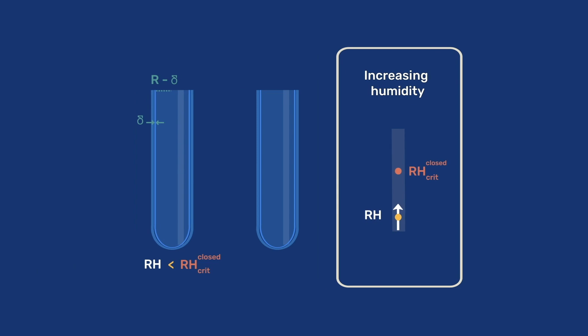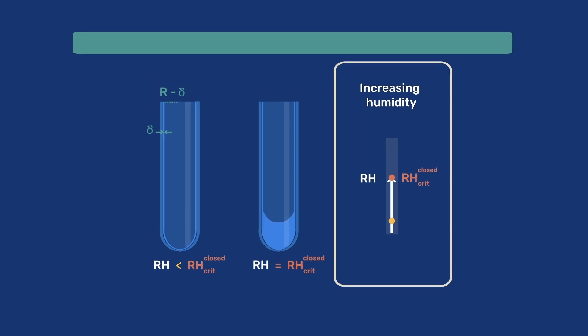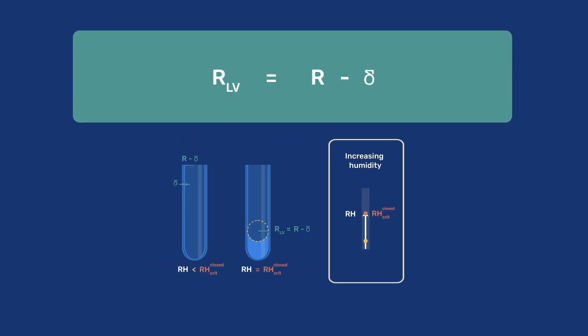Let us now go back to our round-ended capillary with a film of adsorbed water with thickness delta. The point at which capillary condensation takes place is obtained from our previous equation, when RLV equals R minus delta. Since delta is on the order of one nanometer, it is usually justifiable to neglect it, but we will include it in our equations for completeness.